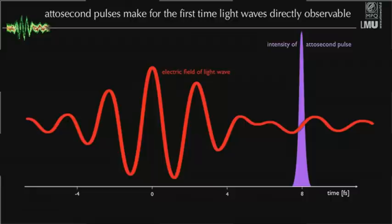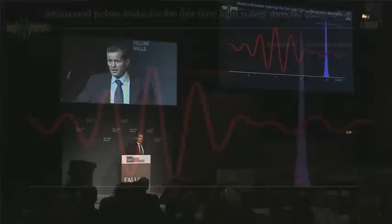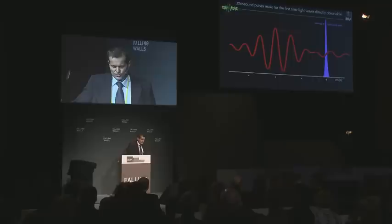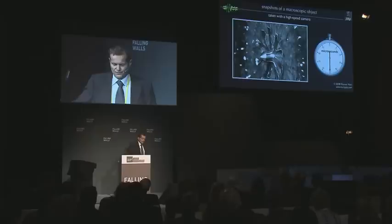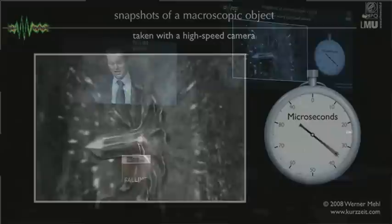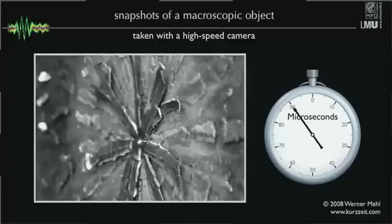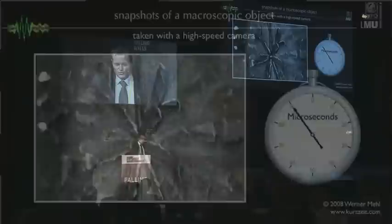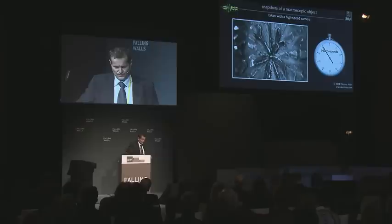With these tools — the few-cycle laser wave and the attosecond pulse — we can now set out to capturing electron motion with never-before-achieved resolution. Just as snapshots of a macroscopic object can be taken with a high-speed camera with a microsecond exposure time, and from these snapshots the motion can be reconstructed in slow-motion replay to make it perceivable to our eyes, attosecond pulses meanwhile allow us to take very similar snapshots of electrons moving deep inside atoms.